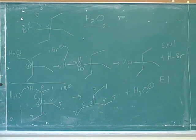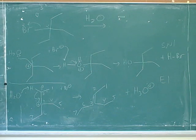Leaving group leaves, pi bond forms, and beta hydrogen gets stolen. In an E2, those three things happen simultaneously. But in an E1, first leaving group leaves.